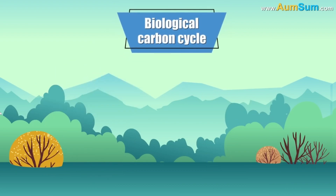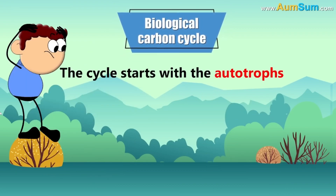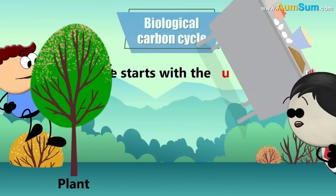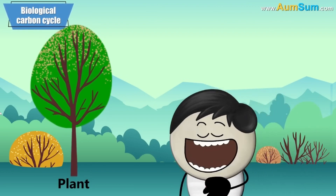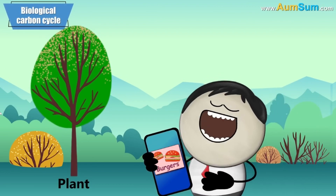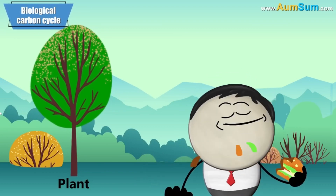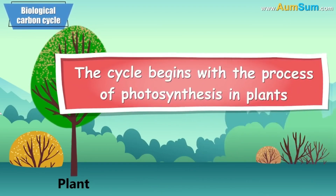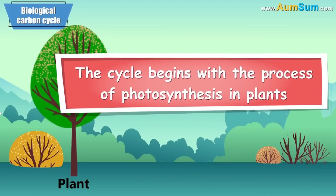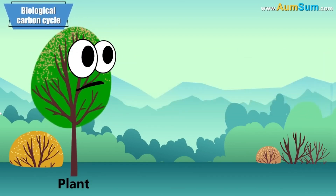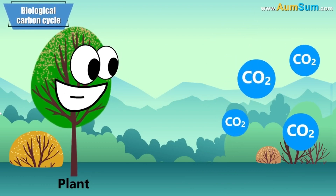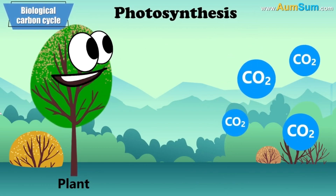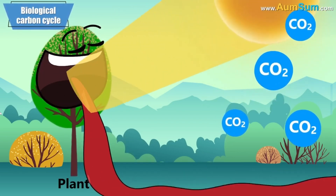Let's first talk about the biological carbon cycle. The cycle starts with the autotrophs — the ones who can make their own food. Plants. The cycle begins with the process of photosynthesis in plants. To make their own food, plants need carbon. This carbon is present in the air in the form of carbon dioxide. During photosynthesis, in the presence of sunlight, plants take in carbon dioxide.